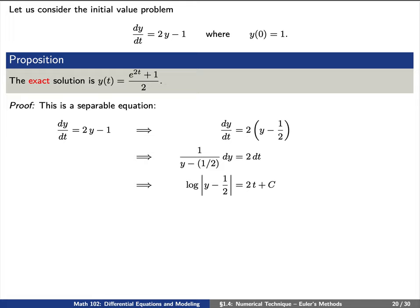Now let's bring all of the y terms to the left and all the t terms to the right. We'll integrate both sides, to find log of absolute value y minus 1/2 equals 2t plus some constant c.